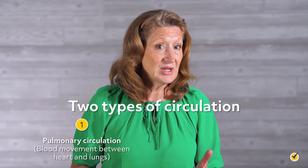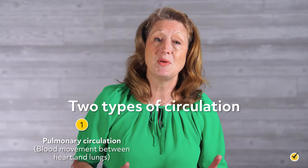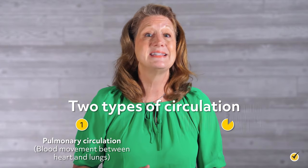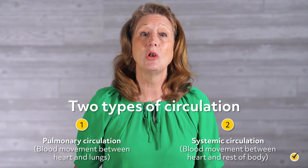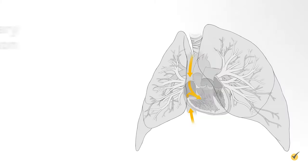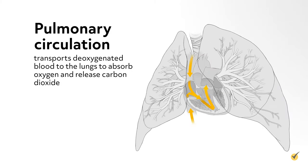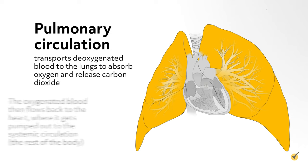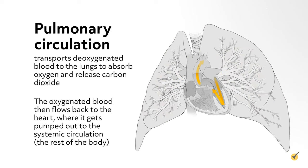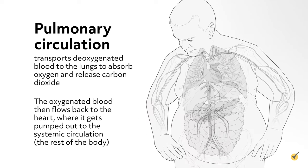Now let's look at the circulation of blood through the body. There are two types of circulation: pulmonary circulation, where blood moves between the heart and the lungs, and systemic circulation, which is the path blood takes between the heart and all organs and tissues in the rest of the body. Pulmonary circulation transports deoxygenated blood to the lungs to absorb oxygen and release carbon dioxide. The oxygenated blood then flows back to the heart, where it gets pumped out to the systemic circulation.